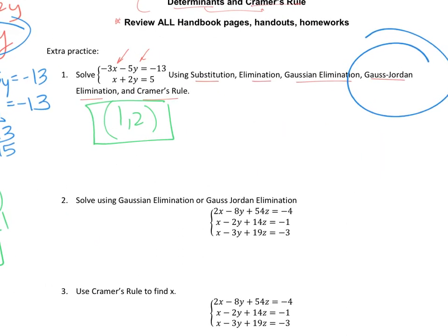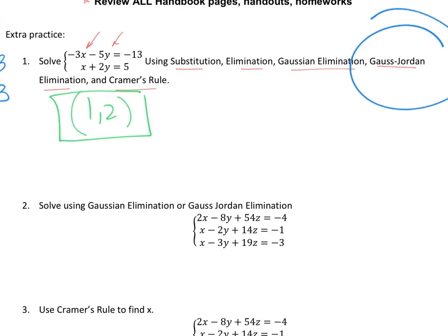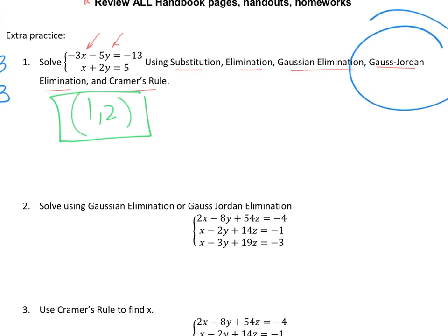Going back, the only method left is Cramer's Rule, which uses determinants. Remember that to find x using Cramer's Rule, we need the determinant where we replace the x column with the constants, divided by the determinant of the coefficients — and similarly for y.